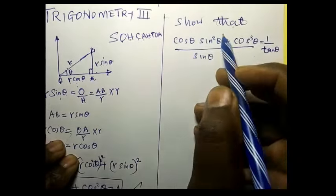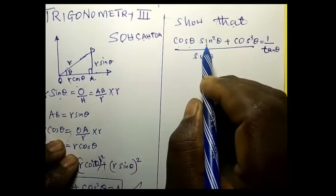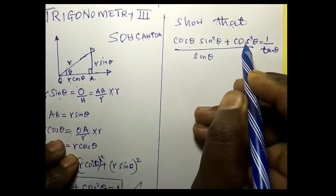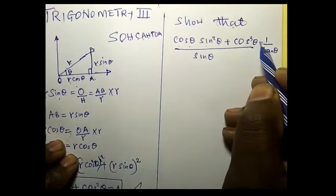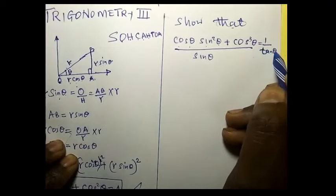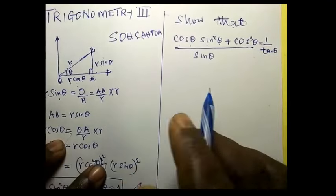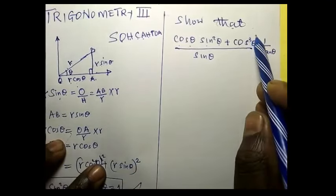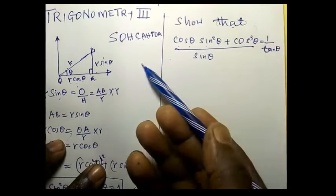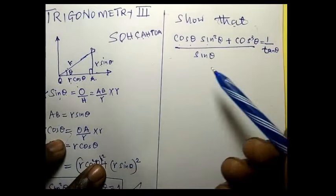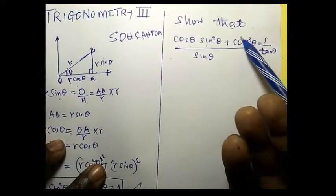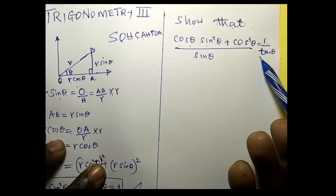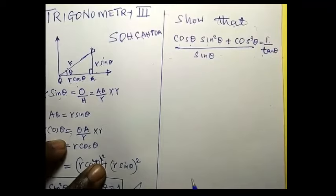Now we have been asking you to show that cos theta sine square theta plus cos cube theta divided by sine theta will be equal to 1 over tan theta. So our aim is to solve the equation on the left side finally to get the answer: 1 over tan theta. So we want to show that this one and this one are equal. So we begin.